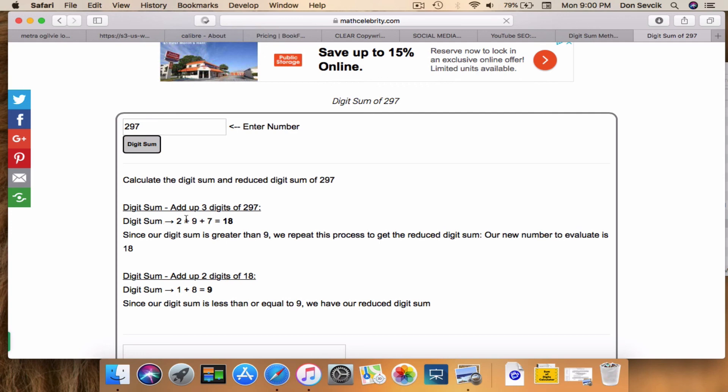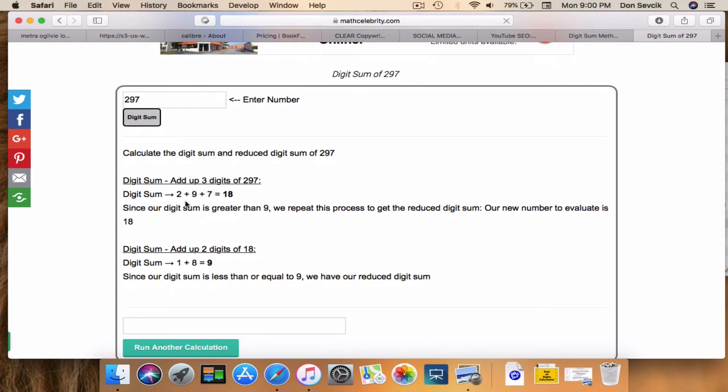Run through the steps—the digit sum's 18. But if you want to do the reduced digit sum, because 18 is greater than 9, we're going to perform digit sum again: 1 plus 8 is 9. And it's that simple.